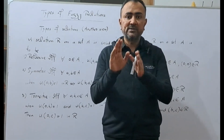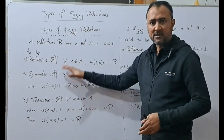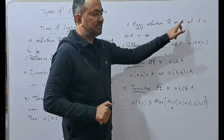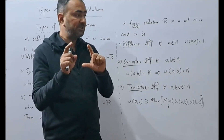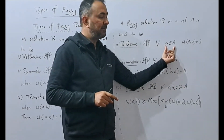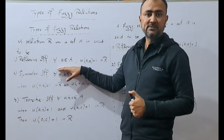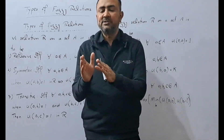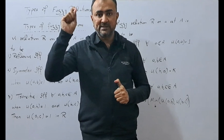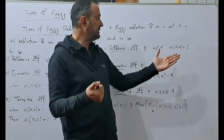Now we move to the concept of types of fuzzy relations. A fuzzy relation R on a set A is said to be reflexive if and only if for all a ∈ A, μ(a, a) = 1. This condition is exactly the same as in the crisp relation case. For a fuzzy relation to be reflexive, each element a ∈ A must have the pair (a, a) in the fuzzy relation with membership value 1.